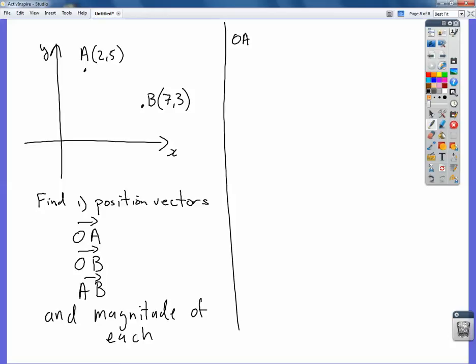So let's start with O to A. You can see that X is 2, so 2 lots of i plus 5 lots of j.